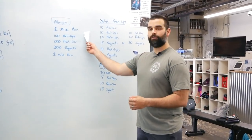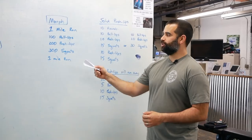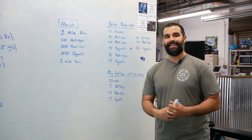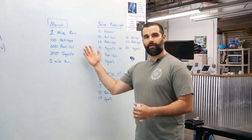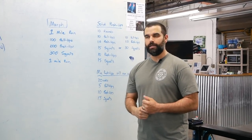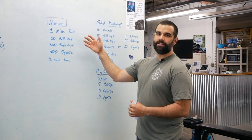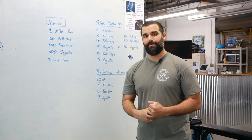So we have Murph, it's a one mile run, 100 pull-ups, 200 push-ups, 300 squats, one mile run. This is one of Lieutenant Murphy's favorite workouts. He called it body armor because you wear a vest or body armor during it as well. You are allowed to partition any way you want the pull-ups, push-ups, and squats. We're going to talk about that.